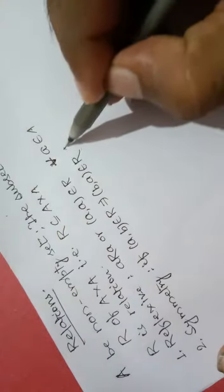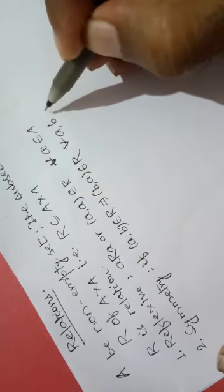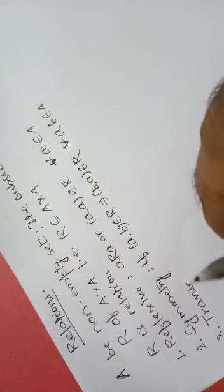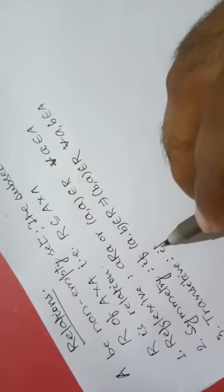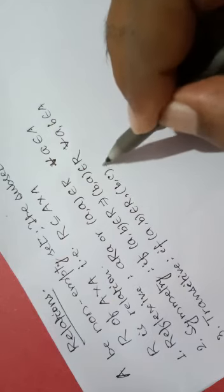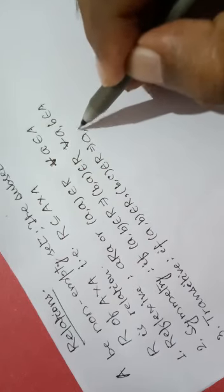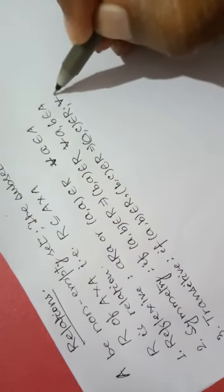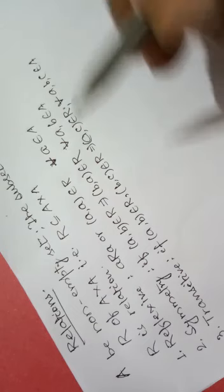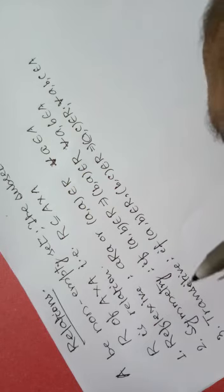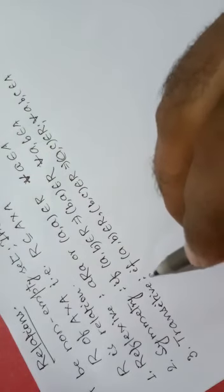Symmetry condition: for all A, B belonging to A. And finally, transitive. Transitive relation means if (A,B) belongs to R and (B,C) belongs to R, then (A,C) also belongs to R, for all A, B, C belonging to A. If R satisfies all three conditions — reflexive, symmetry, and transitive — then it is called an equivalence relation.